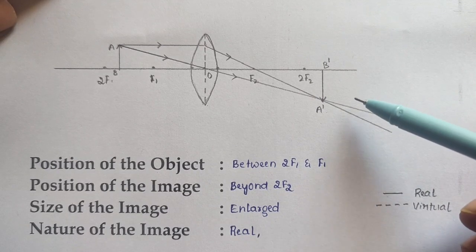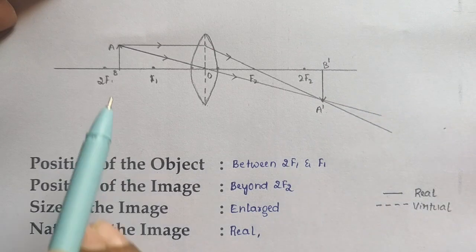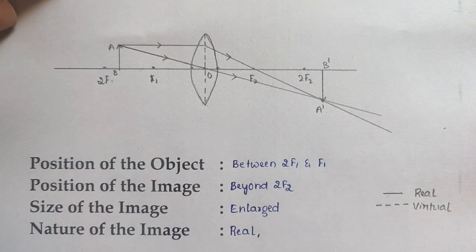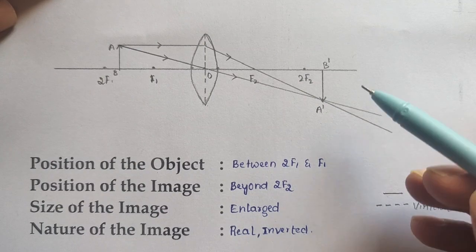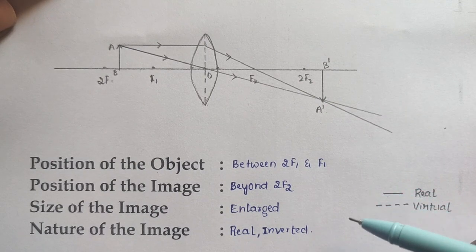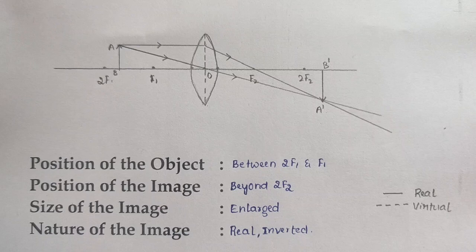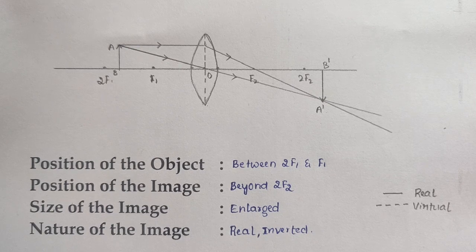Is the image erect or inverted? The object is erect above the principal axis, but the image is below the principal axis — so the image is inverted. So the final conclusion: when the object is between 2F1 and F1, the image is real, enlarged, inverted, and formed beyond 2F2. Tips and tricks — follow these steps and you will get full marks for the ray diagram. Thank you so much for watching.